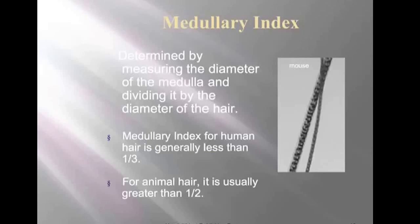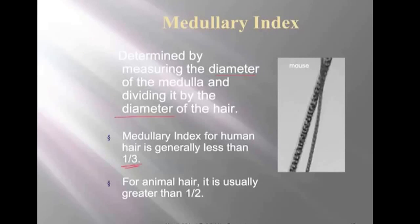The medullary index is determined by measuring the diameter of the medulla and dividing it by the diameter of the hair — essentially, how large is the medulla compared to the whole shaft. For humans, the medullary index is generally less than one-third. For animal hair, we're going to see a really large medulla — greater than half of the whole hair shaft. So animal hair has a very large medullary index.